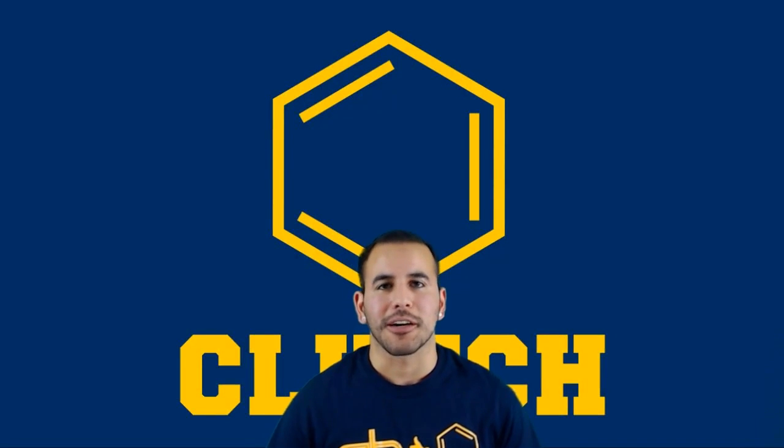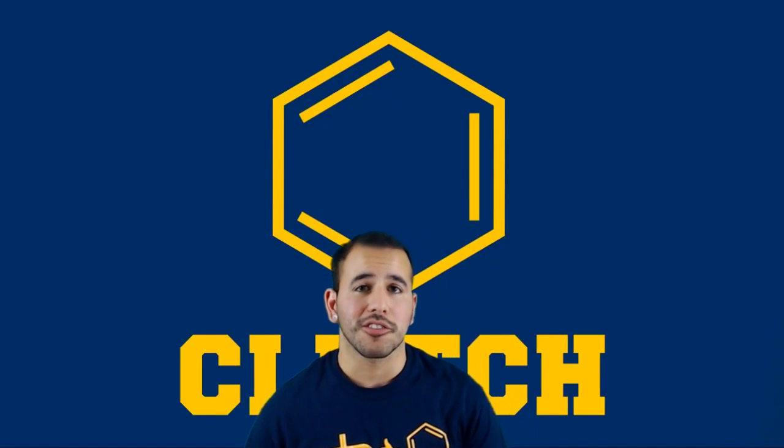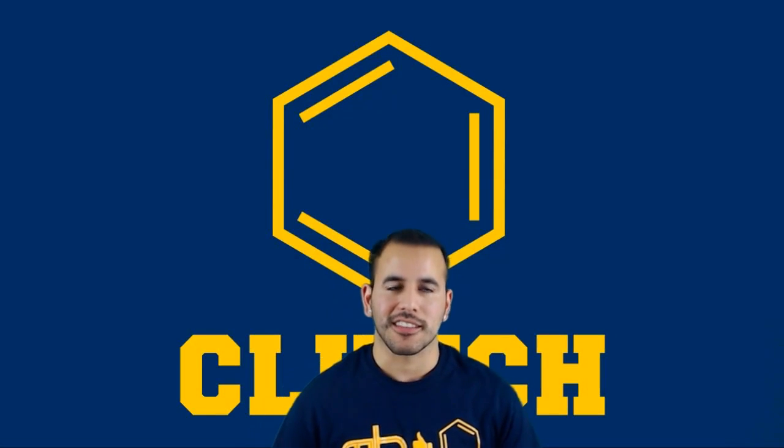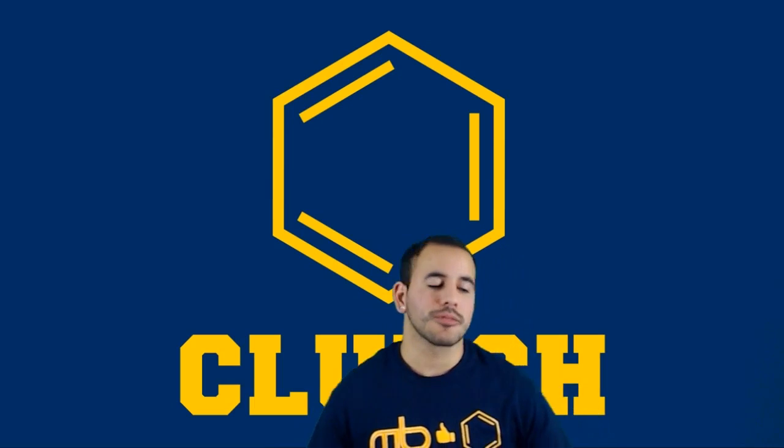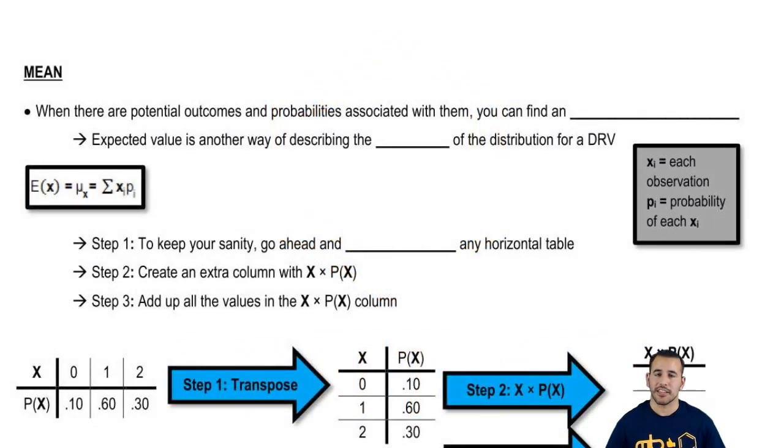Hey guys, so last time we talked about discrete random variables and how to calculate the probabilities associated with these distributions. Let's go ahead and move on to, now with those distributions and possible outcomes, we can find means and standard deviations.